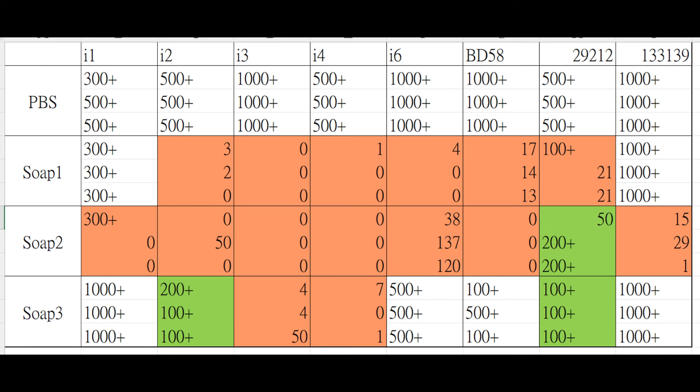You might feel that this number two soap has the best antibacterial effect, but when you come to this one, this bacteria 29212, it is the number one soap that has the best antibacterial effect on this bacteria.